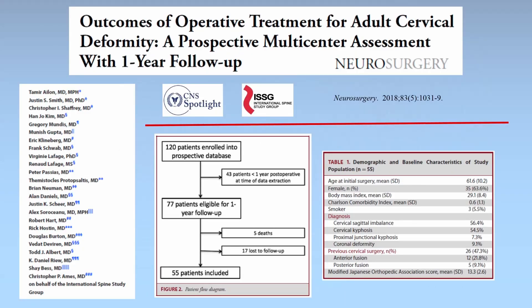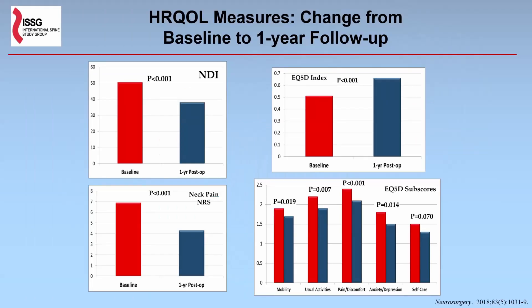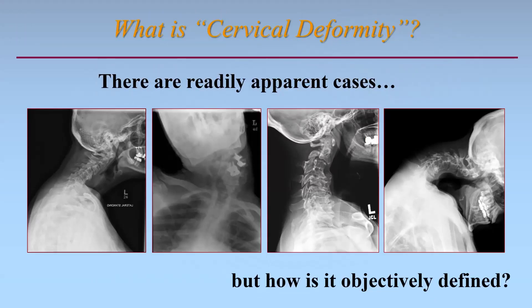We also showed that surgery has the potential to provide significant improvement for cervical deformity patients, across a number of patient-reported outcome measures including pain and disability measures. But what is cervical deformity? Certainly there are the readily apparent cases — patients that come in with chin-on-chest deformity or severe scoliosis — but how is it objectively defined?